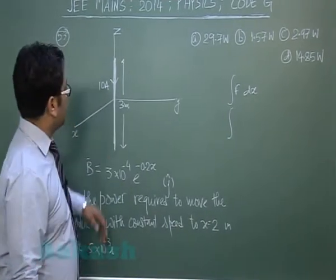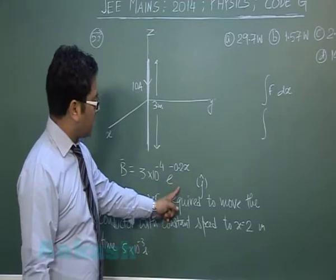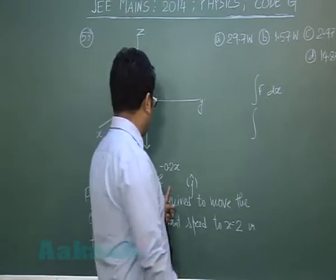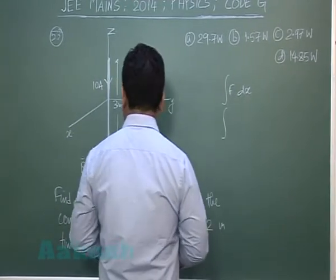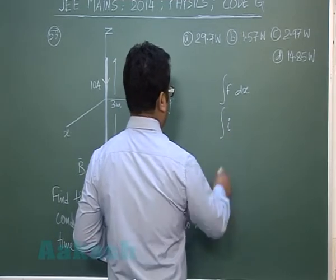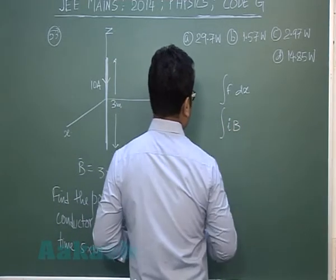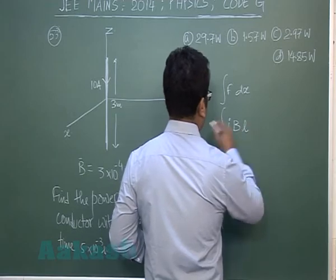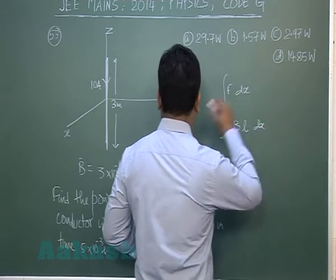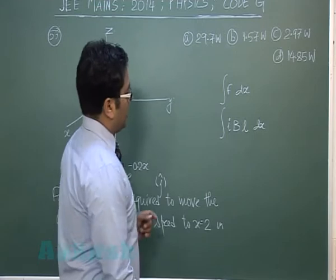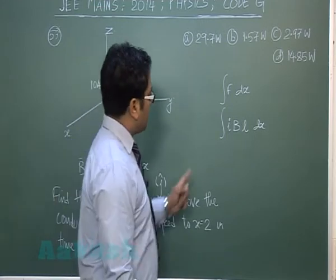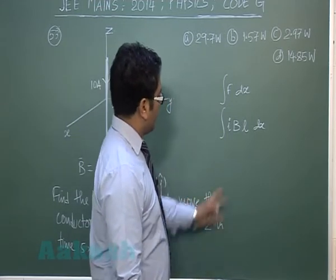The magnetic force is I·B·L·dx. That's the magnetic force acting, and the magnetic field is a function of x.